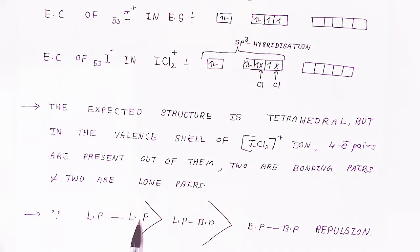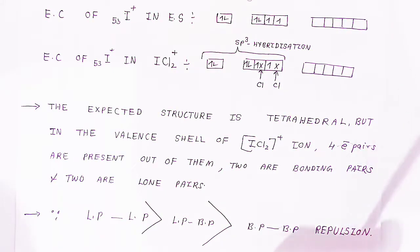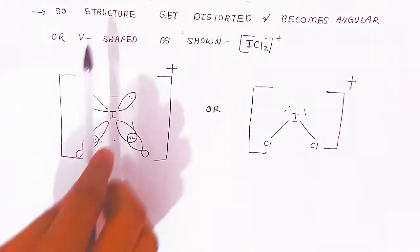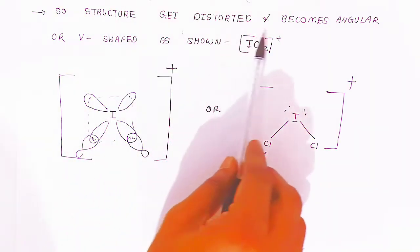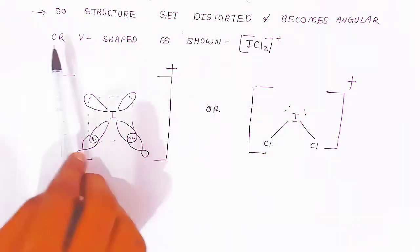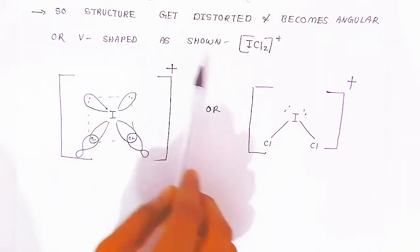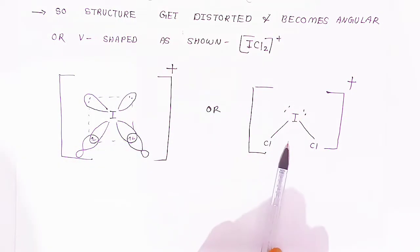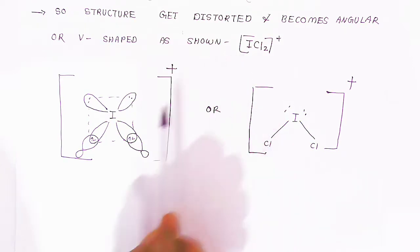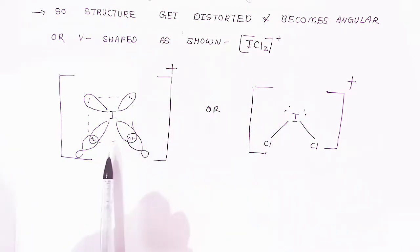Because of the lone pair–lone pair repulsion being greater than bond pair–bond pair repulsion, the structure is distorted and becomes angular, a V-shaped structure.